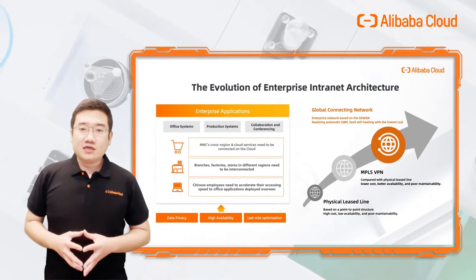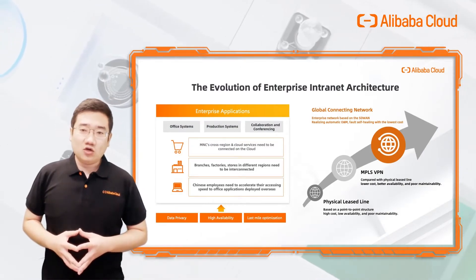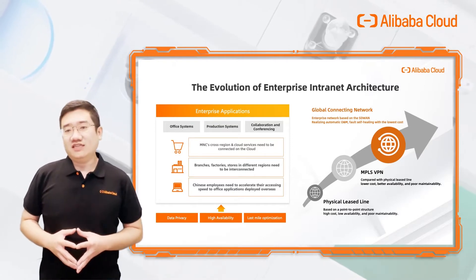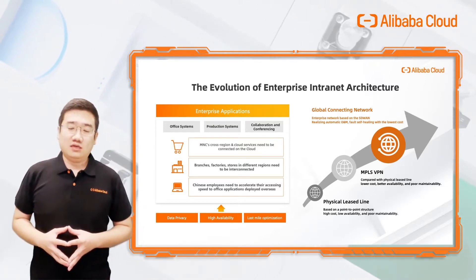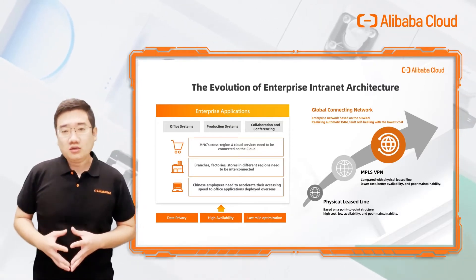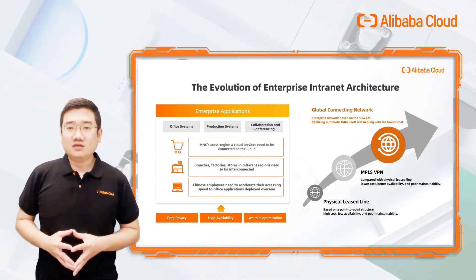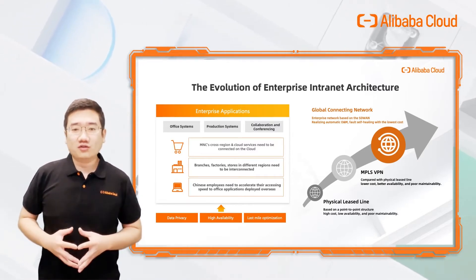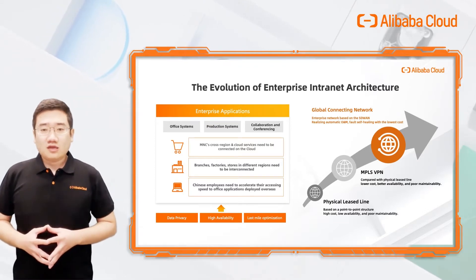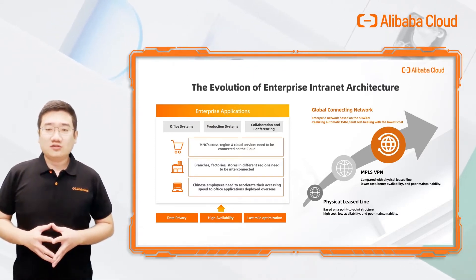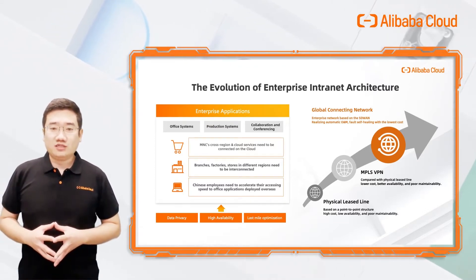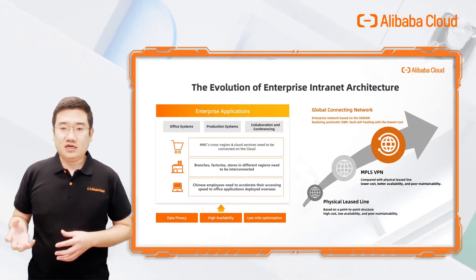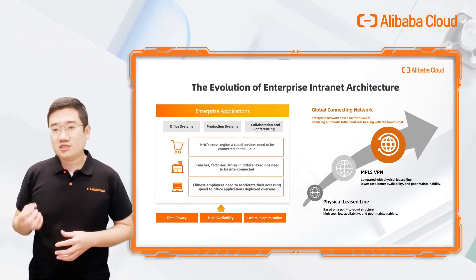Let's take a look at how to build a global hybrid network. Maybe you have regional offices or IDCs in multiple places around the world, and you have employees on the go with laptops or cell phones, and they only access the enterprise internal system, which is deployed in the IDC or cloud, just like HR, ERP, or CRM.